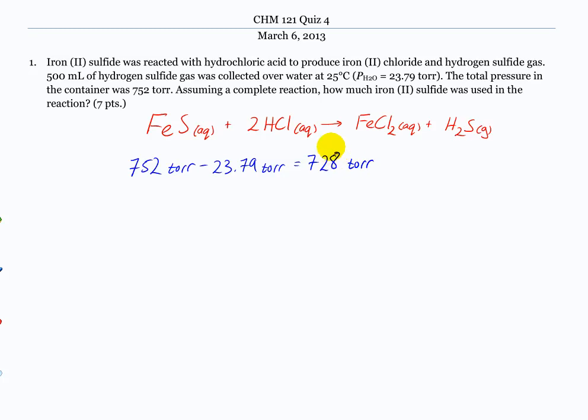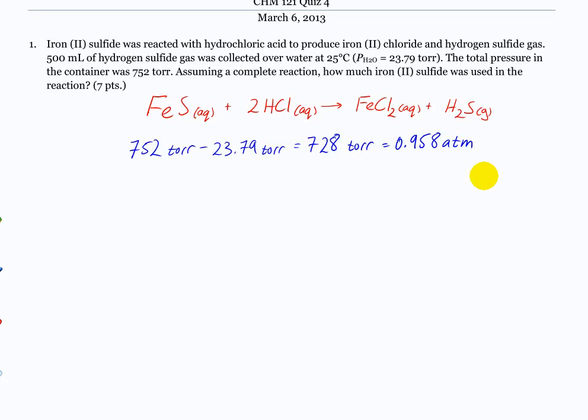So 752 torr minus 23.79 torr equals 728. We're keeping consistent with everything. And 728 torr is, I think, 0.958 atmospheres. So we're going to divide by 760 to get to atmospheres. That is a conversion that's important to know.